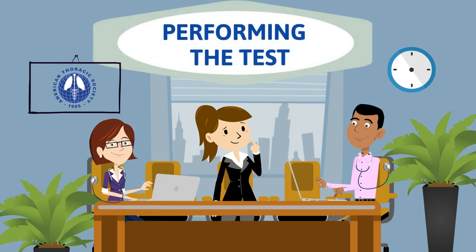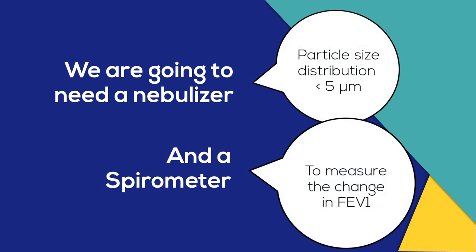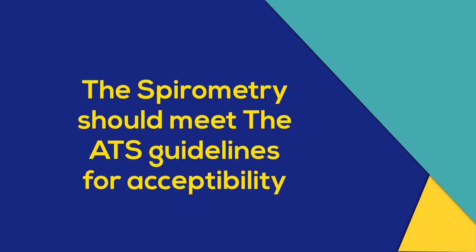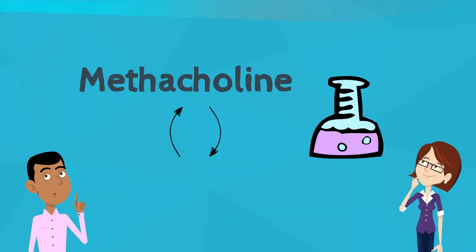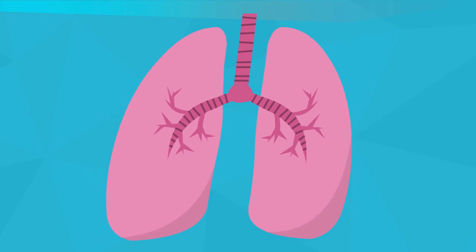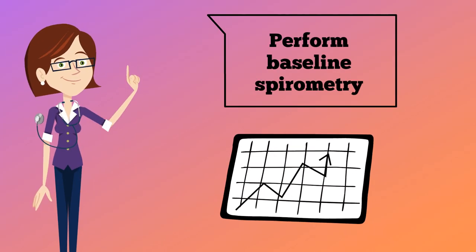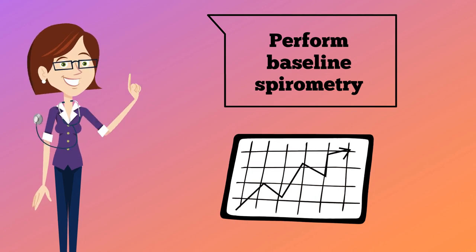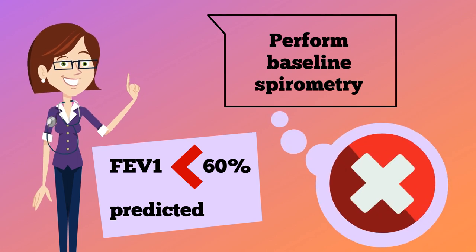Performing the test: methacholine is a synthetic derivative of acetylcholine and directly stimulates airway muscarinic receptors, causing bronchospasm. The first step is to perform a baseline spirometry and look at the FEV1. If the FEV1 is less than 60% predicted, you do not perform the test.